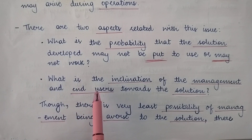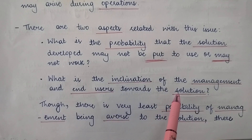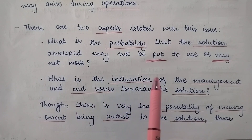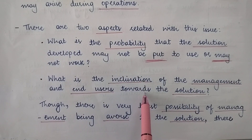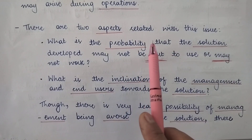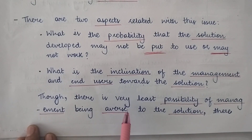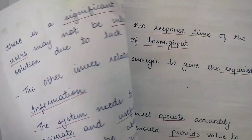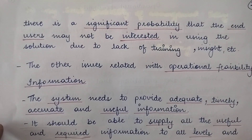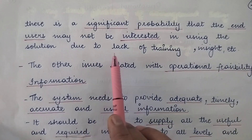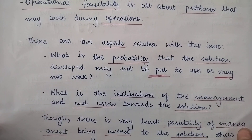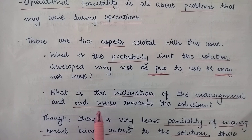The second aspect studies what is the inclination of the management and end users towards the solution — how much inclined the management or the end users who will be using the information system are towards the solution. These are the two aspects that are studied in relation to operational feasibility. Though there is a very least possibility of management being averse to the solution, there is a significant probability that end users may not be interested in using the solution due to lack of training, insight, etc.